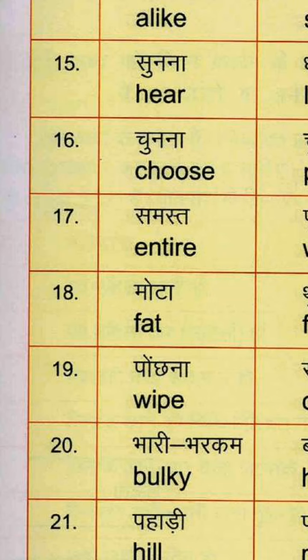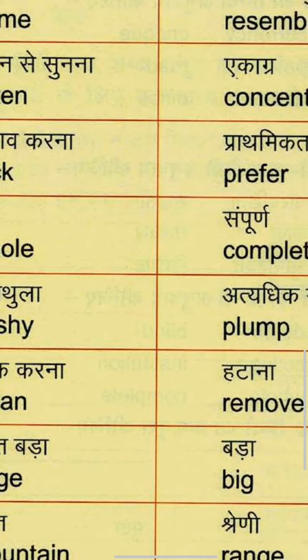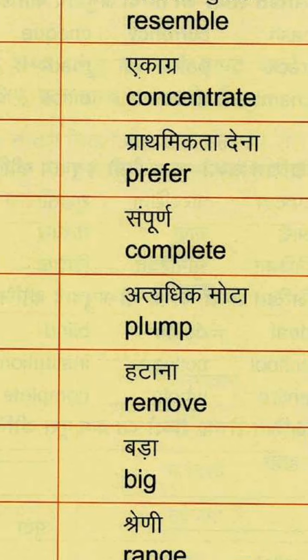Fifteenth group: Sunna means Hear — H-E-A-R. Dhyan se sunna means Listen — L-I-S-T-E-N, as in the teacher says 'listen to me carefully.' And Ekaagra means Concentrate — C-O-N-C-E-N-T-R-A-T-E, meaning when the teacher is teaching, we should be focused.